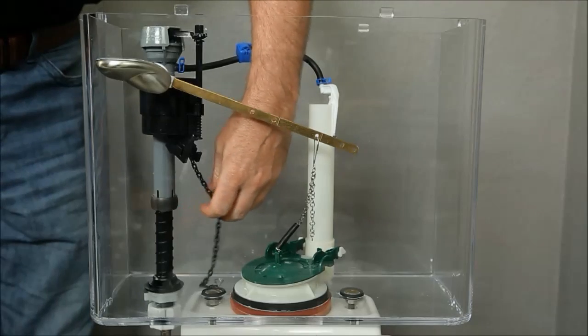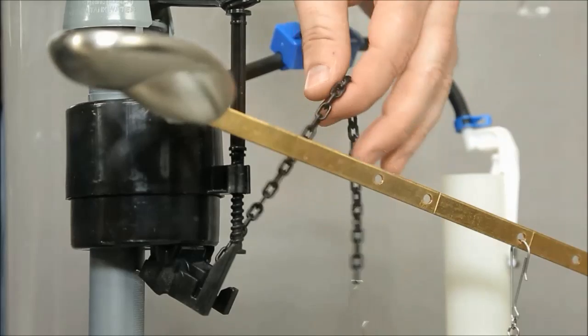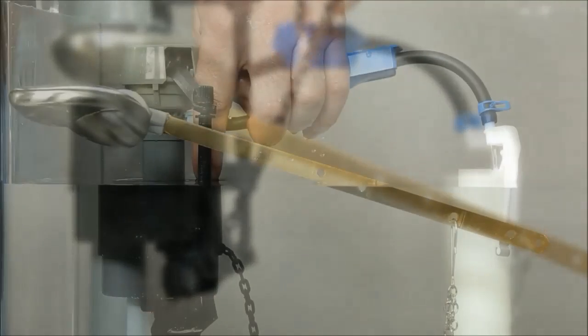Manually disengage the leak sentry device to allow the tank to refill. Simply pull up on the chain to do so and let the float cup fall.